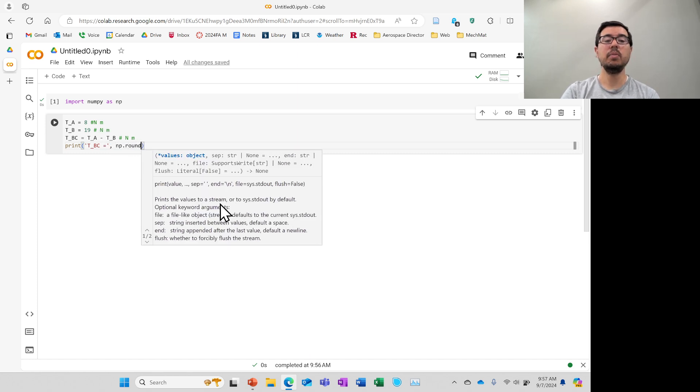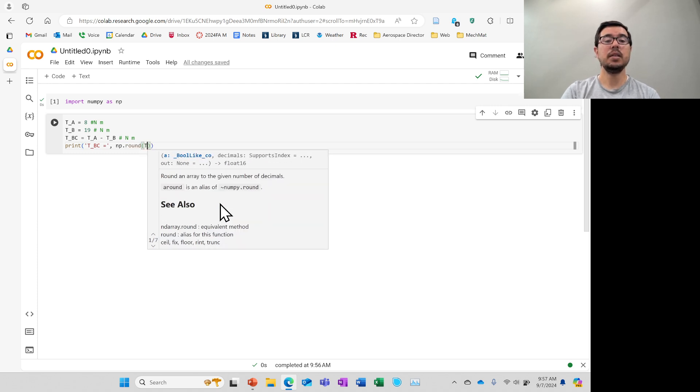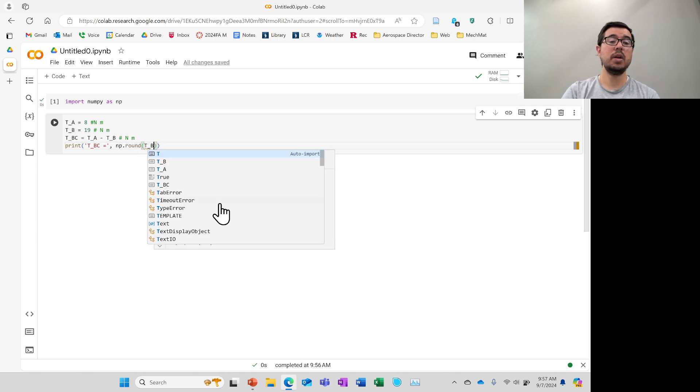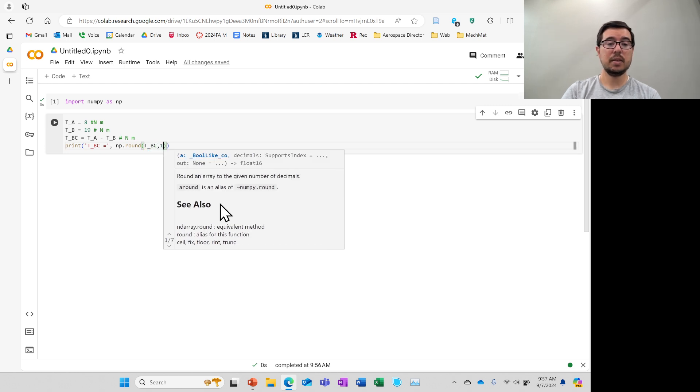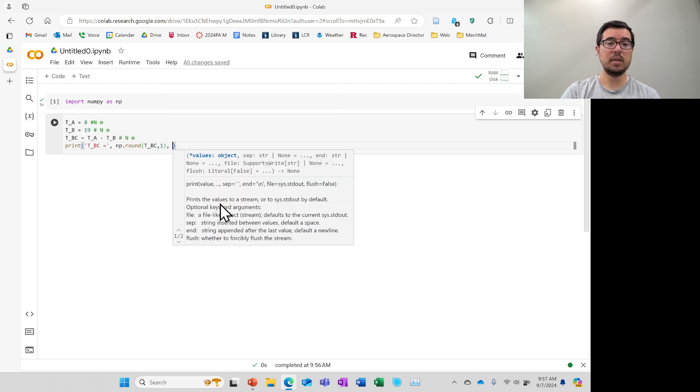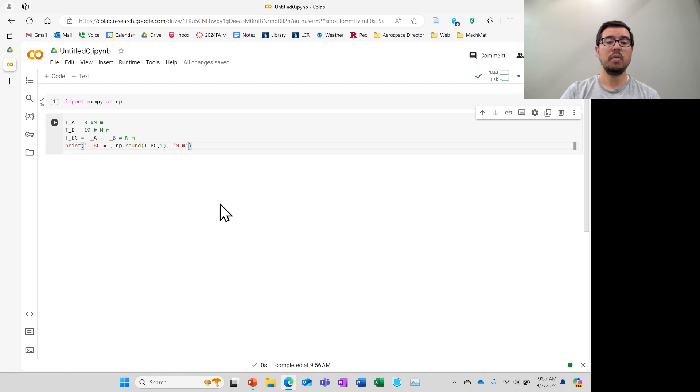Later on when we're in some problems, not all of them, when we have a number of parameters or we need to do more complex calculations like using linear algebra on a truss, these examples may be just useful in helping us remember how to approach these problems. Okay so once again we see that T subscript BC is equal to minus 11 Nm. Thank you.